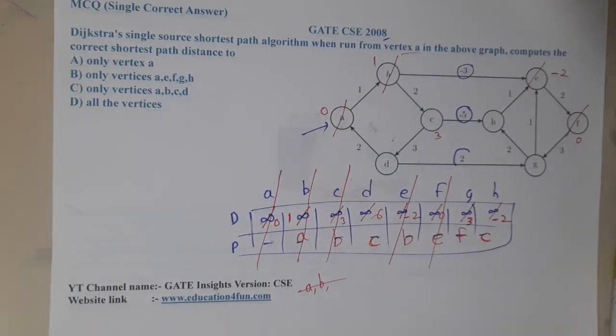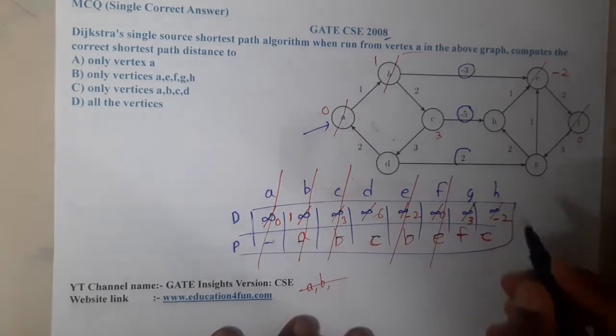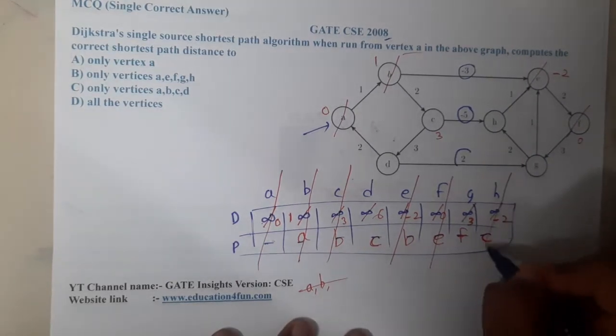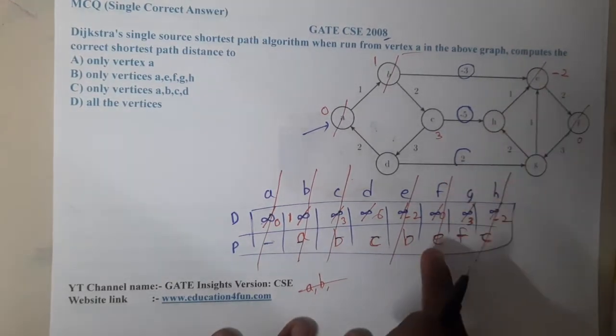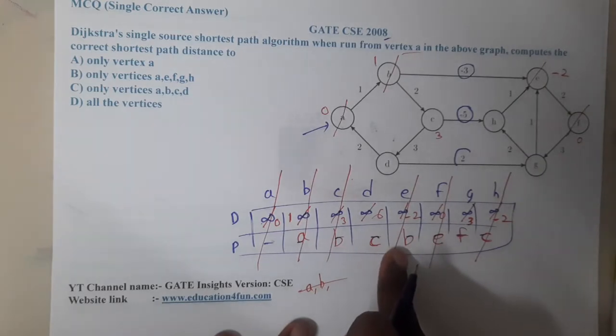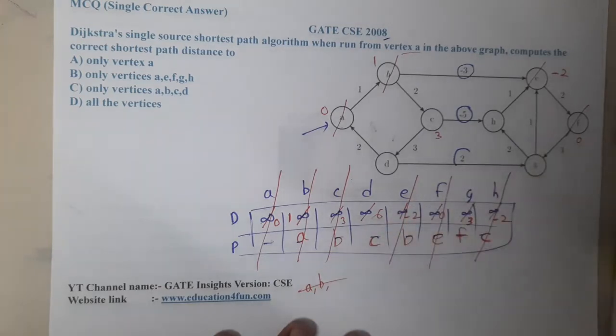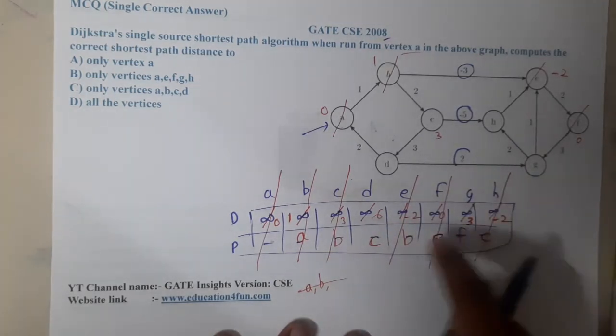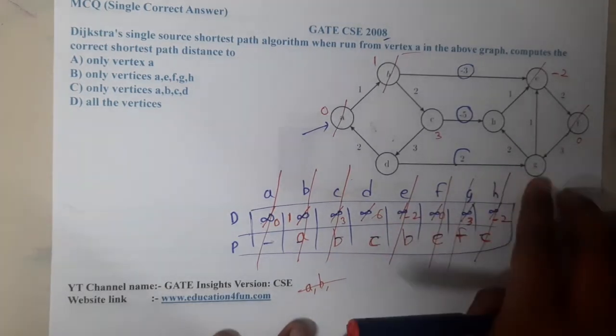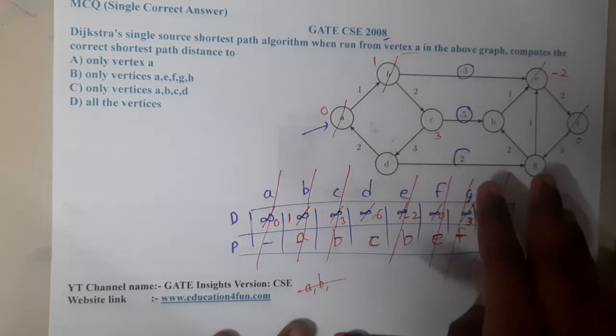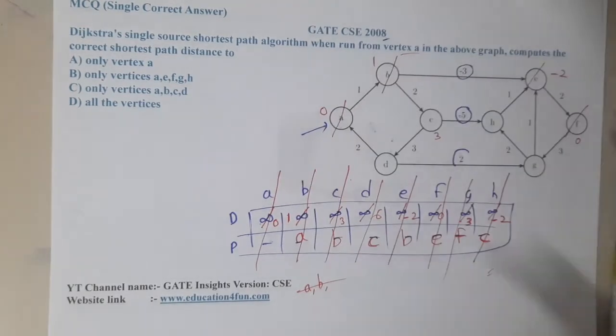Now we have filled the whole table and what is the minimum value now? The minimum value is minus 2, so from h where I can go? I can go to e but it is already finalized. So if you even compare anywhere there is no other path, so it is done. So h is done. Now the minimum value is g. From g where I can go? I can go to h but h is already finalized, so there is no change. And at the end d is done.